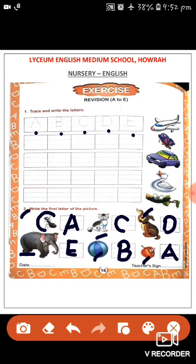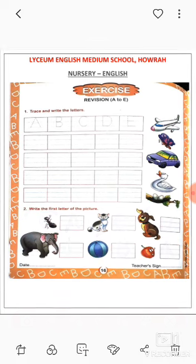Have you understood? A for ant. C for cat. D for dog. E for elephant. B for ball. A for apple. Okay children. Next one.